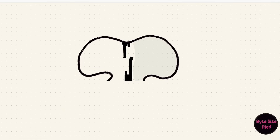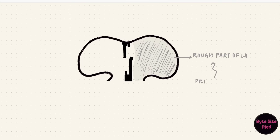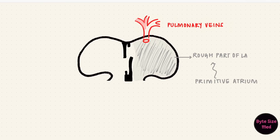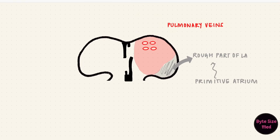Similarly, the left atrium has a rough part and a smooth part. The rough part is formed from the primitive atrium, just like the right atrium. Initially, the left atrium has the opening of the stem of the pulmonary vein, which is formed by four branches. All the stems get absorbed into the atrial wall, leaving the openings of the four pulmonary veins. So the smooth part is formed by the absorption of the pulmonary veins.